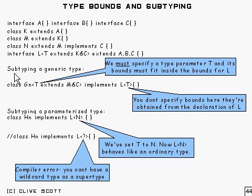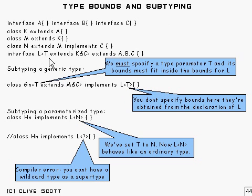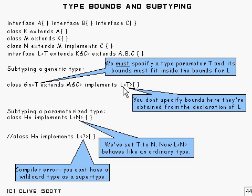So suppose when we're subtyping a generic type — we've got this type `gn` here, and it implements this interface `l`. This interface has got a type parameter `t` which extends `k` and `c`, and it also extends `a`, `b`, and `c`. So we're subtyping this generic type. Now the first thing to note is that this interface down here, which is the general form —